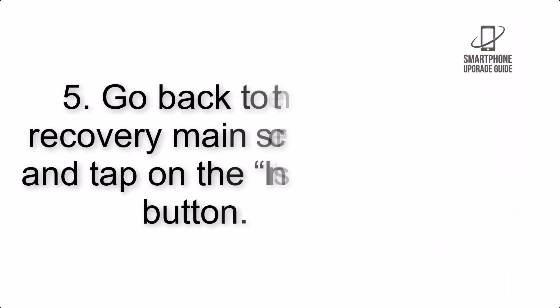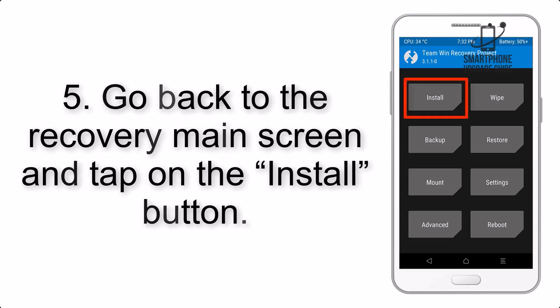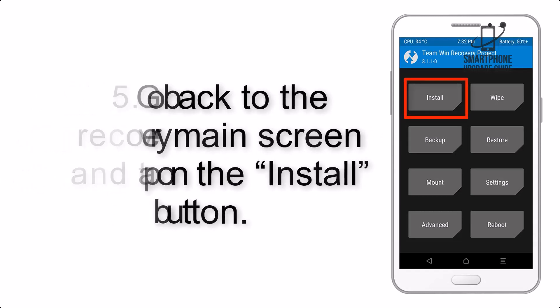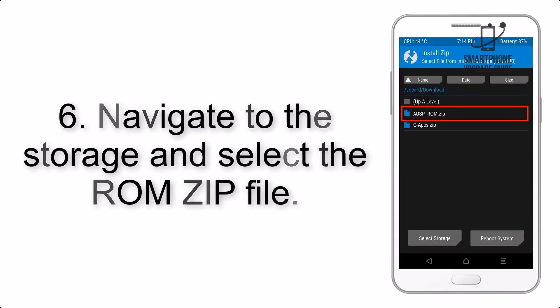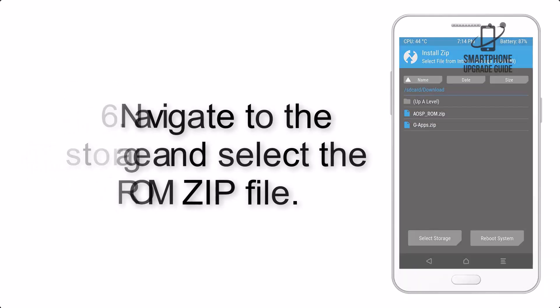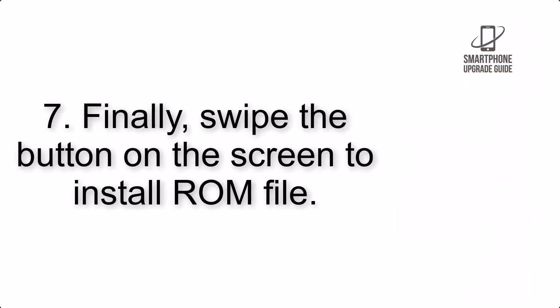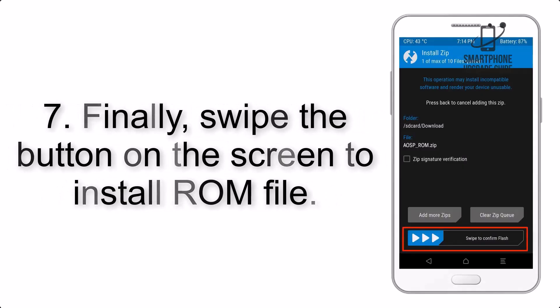Step 4: Swipe the button to wipe the device. Step 5: Go back to the recovery main screen and tap on the Install button. Step 6: Navigate to the storage and select the ROM zip file.